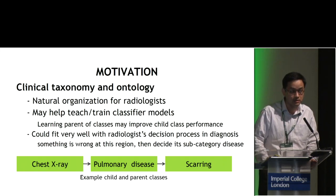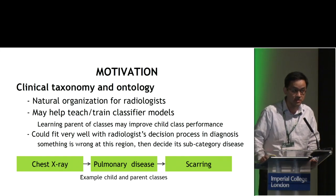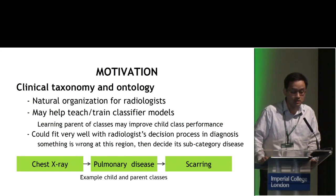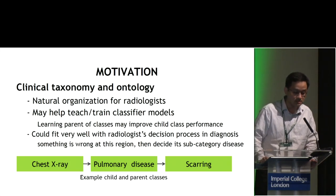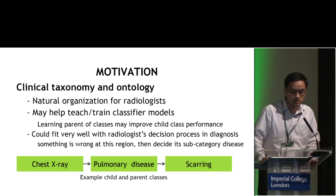So we want to use the clinical taxonomy and ontology because we find that that's actually a natural organization for radiologists. We feel this is not just additional to the ground truth labels — this is actually what's in the radiologist's mind. They learned this from their experience and also from the textbook, but we never included it in our deep learning training. By learning the parent class, it may improve the child class performance.